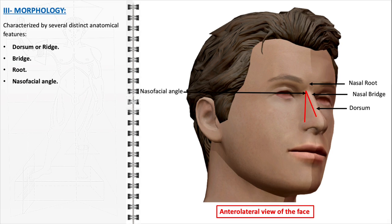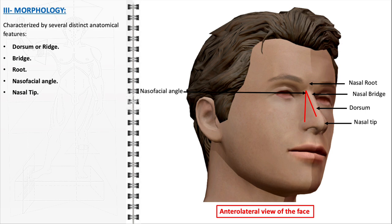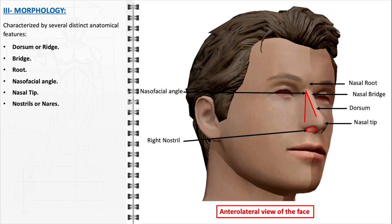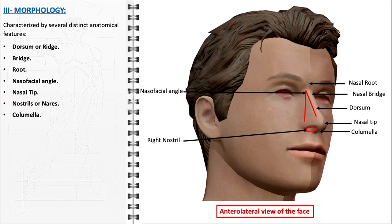The nasofacial angle is formed by the intersection of lines drawn from the forehead to the root of the nose and from the root down the dorsum, serving as an important aesthetic marker influencing the perceived protrusion or flatness of the nose. The nasal tip is the most forward projecting part of the nose, formed by the lower lateral cartilages, and its shape is crucial in determining the overall appearance. The nostrils or nares are the two openings at the base of the nose, leading into the nasal cavity, with their shape, size, and symmetry important for both breathing and aesthetic balance. The columella is the strip of tissue separating the nostrils, extending from the nasal tip to the nasal base, supporting the nasal tip and contributing to the angle and definition of the nose.